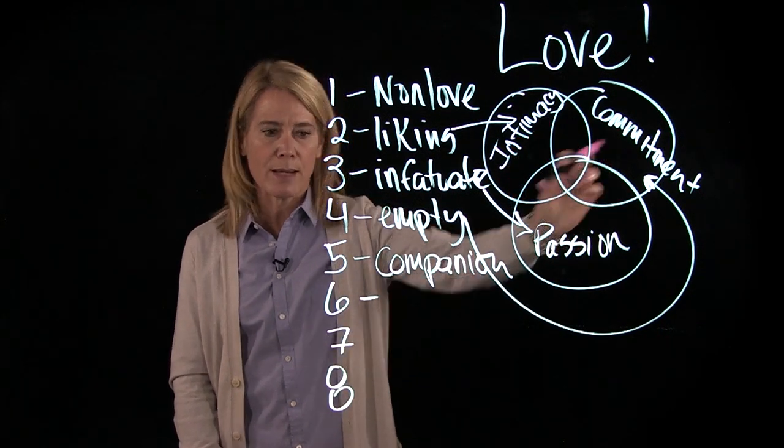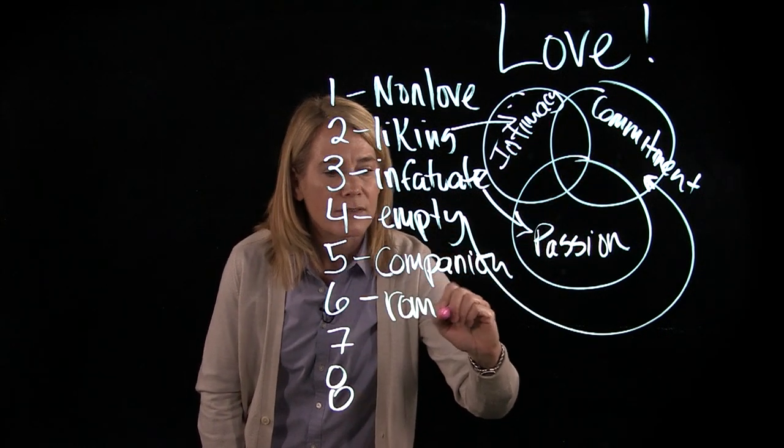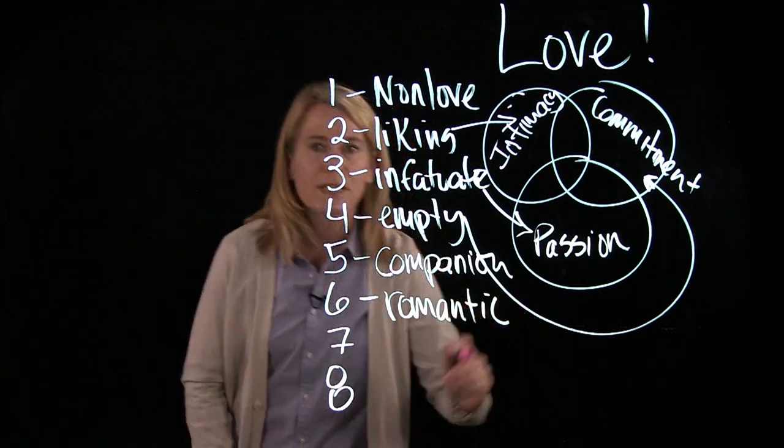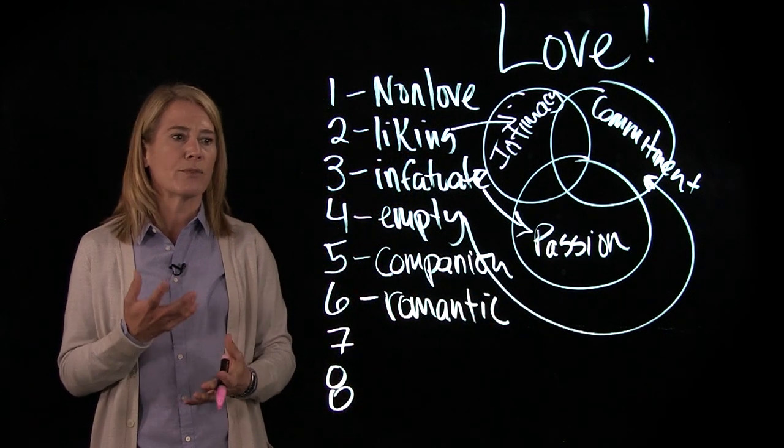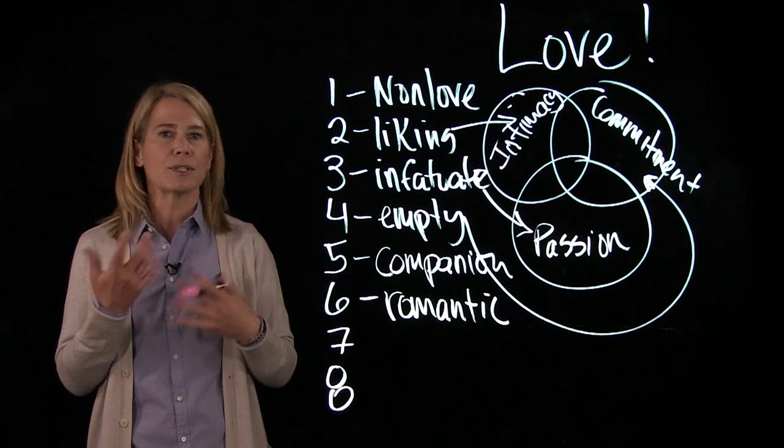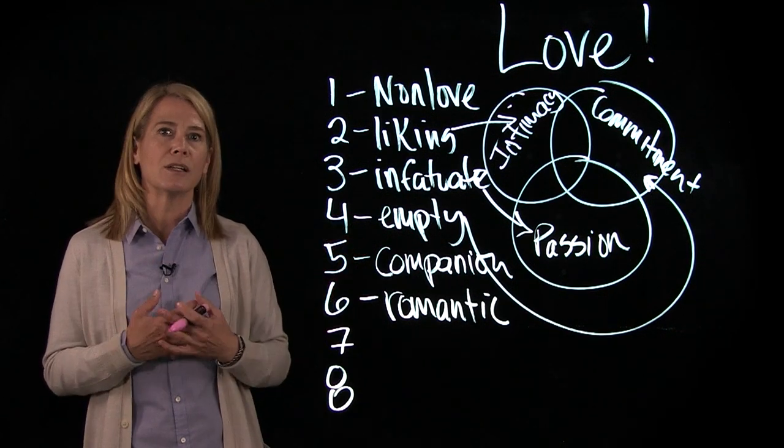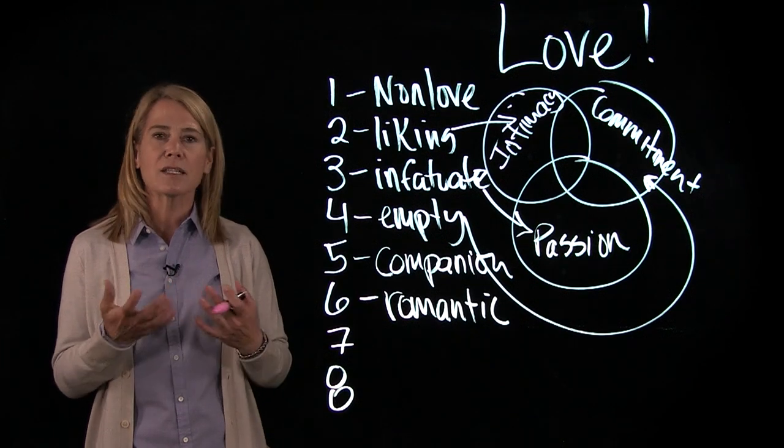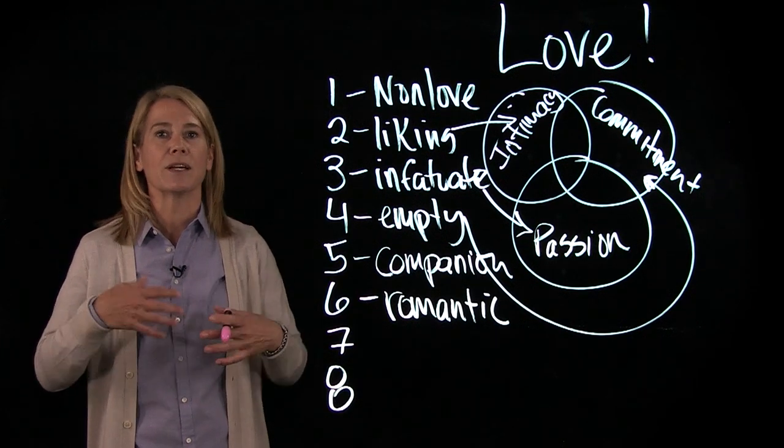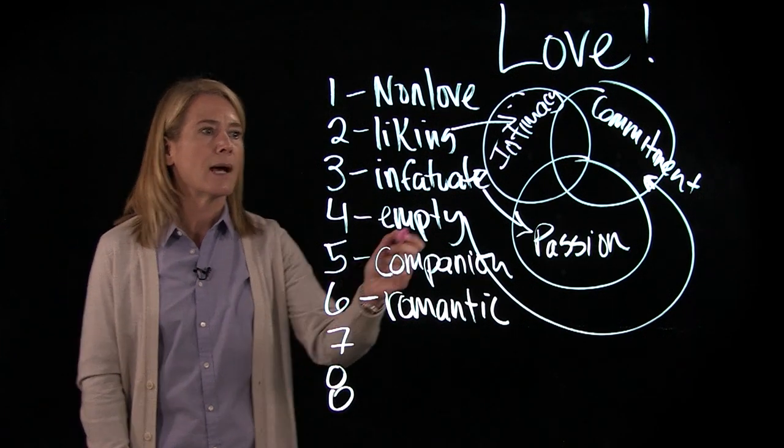Another intersection would be the idea that you are intimate with the person and passionate, but you're not yet committed to that person. And that's what we call romantic love. Romantic love is when you're dating somebody and you've been going out with them for a while. There's physical passion. You share all your secrets. You tell them everything. No detail is too small. But you're not yet committed in any long-term way. That's romantic love. And that's the kind of love that we often talk about when you say, I just fell in love with somebody.